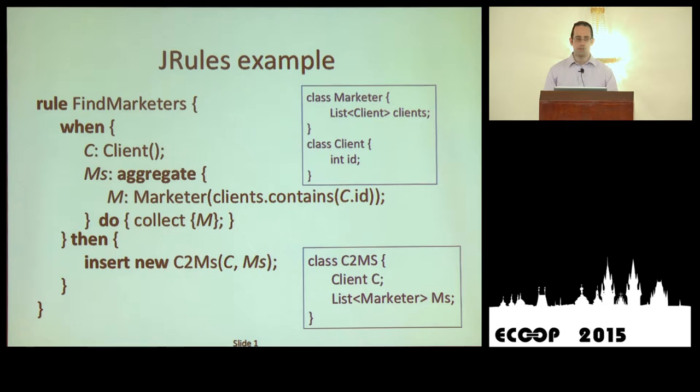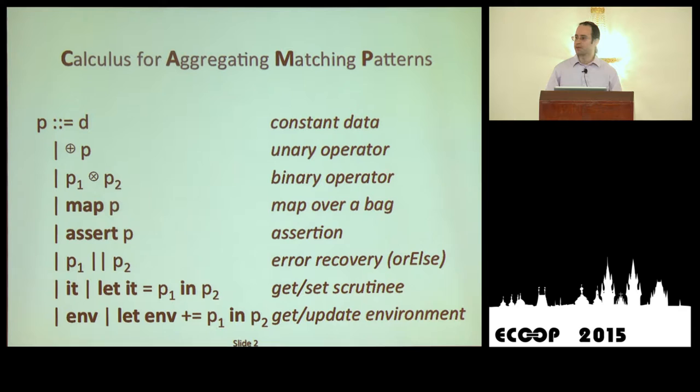The problem we ran into when we wanted to do this was that there was no actual semantics for JRules. There's a grammar and there's an implementation, but no formal semantics. So our next problem was coming up with a semantics we could use to ensure that our compilation was actually correct.